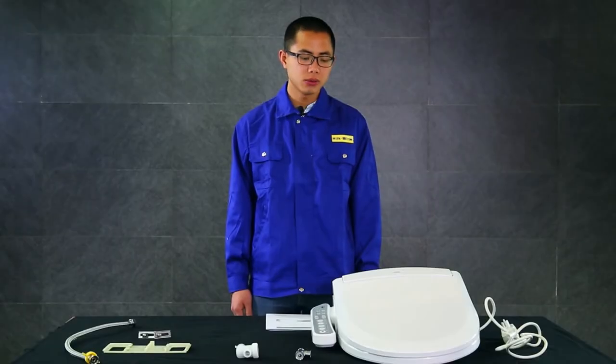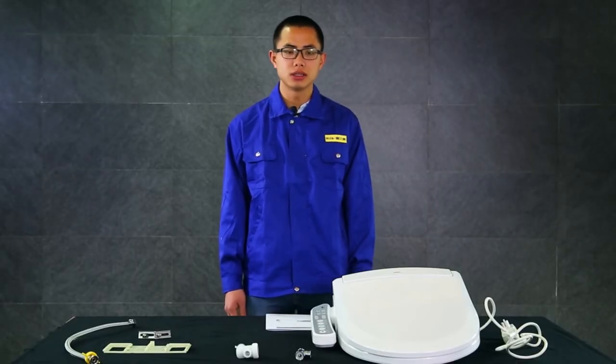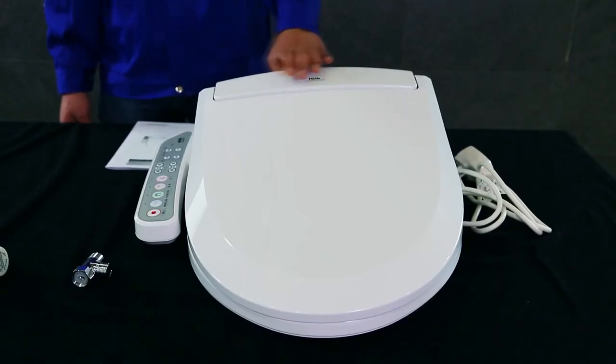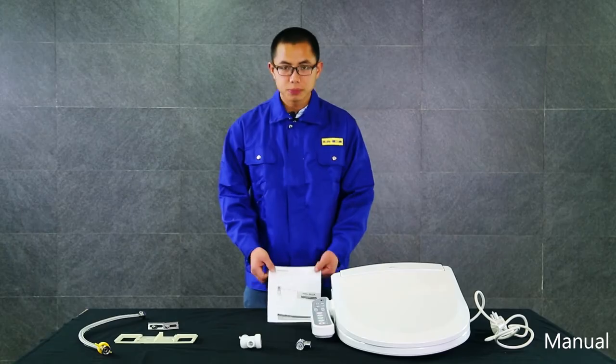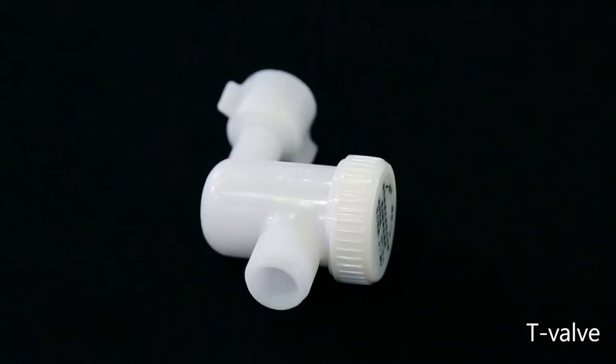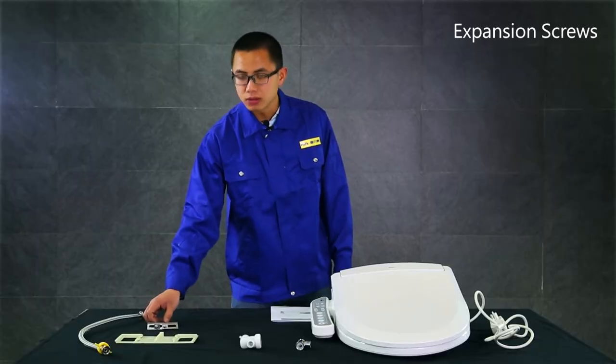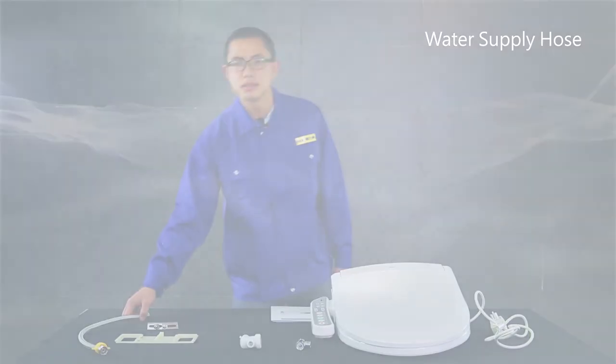Hello and thank you for watching this video. In this video, we'll be walking through the basic steps of how to install a smart toilet seat. One product manual, one T-valve, one filter, one mounting bracket, two expansion screws, one water supply hose.